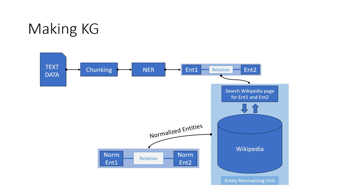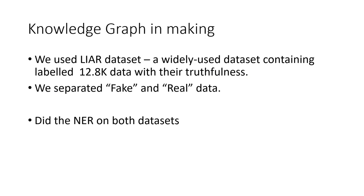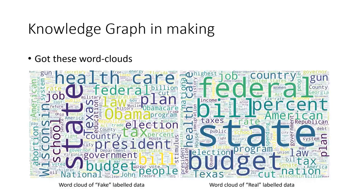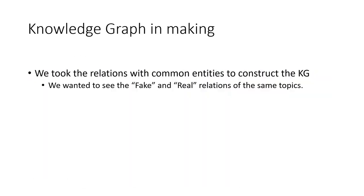The flow diagram for extracting relations from text data works as follows: text data is chunked and sent to the NER unit, which outputs entity-relation-entity triples. This is sent to the entity normalization unit, which uses our Wikipedia search to produce a normalized entity-relation data structure. We used the LIAR dataset, a widely used dataset containing around 12,000 labeled examples with their truthfulness scores. We separated fake and real data, ran NER on both, and created word clouds to visualize word frequency after removing non-named entities. We then took relations with common entities to construct the knowledge graphs, focusing on the same topics across both sources.